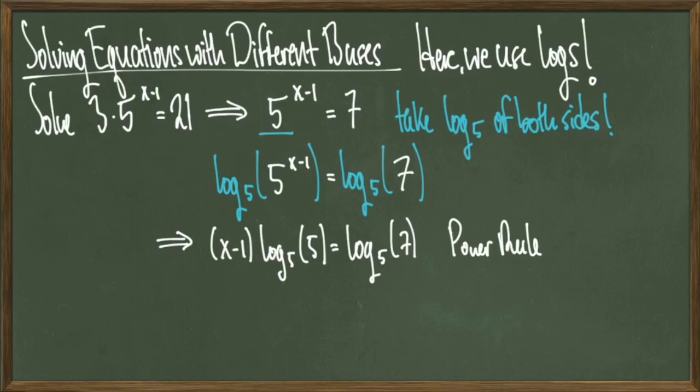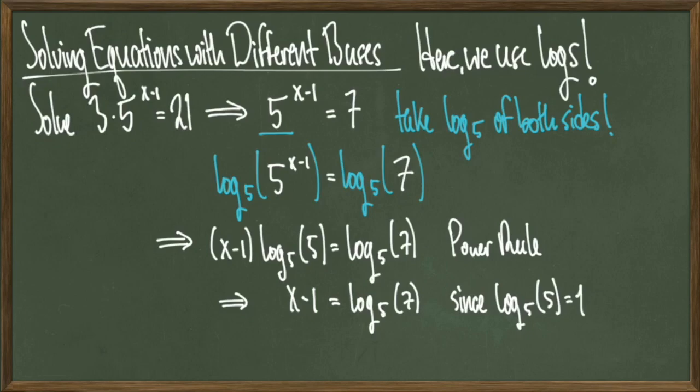Recall that log base 5 of 5 will equal the number 1, so I get the equation x minus 1 equals log base 5 of 7. Now simply solving for x, I get that x equals log base 5 of 7 plus 1 and we're done.